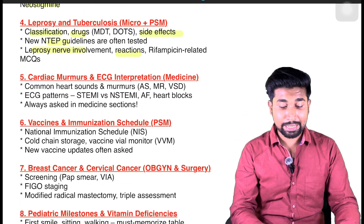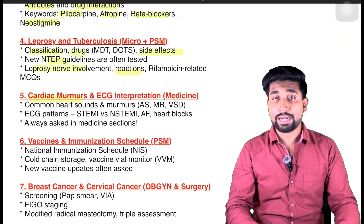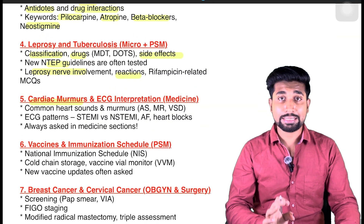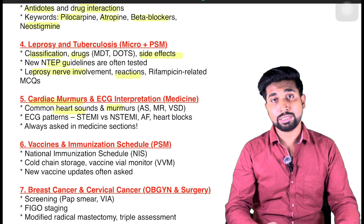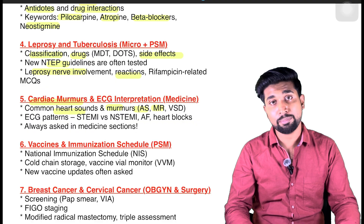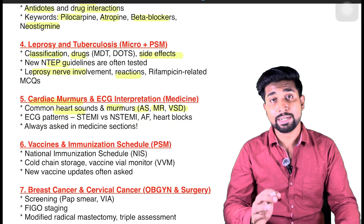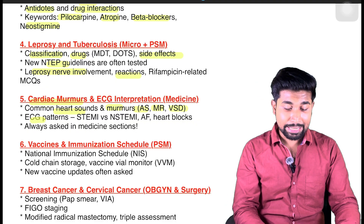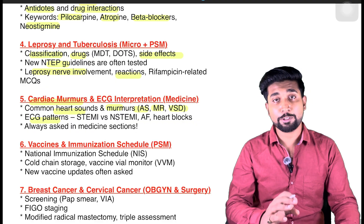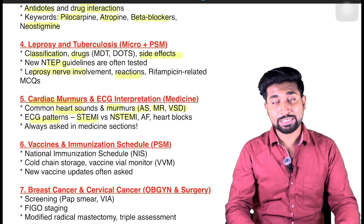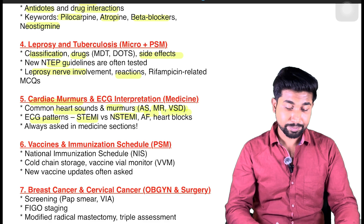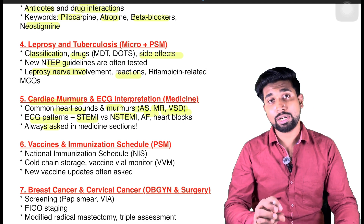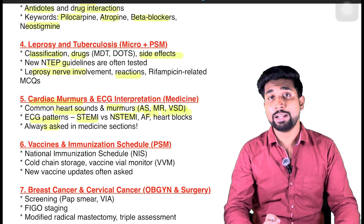From medicine, cardiac murmurs and ECG interpretation are often asked. Cover common heart sounds and murmurs — aortic stenosis, mitral regurgitation, ventricular septal defect, and congenital heart disorders. For ECG, understand the patterns and differentiation between ST-elevated and non-ST-elevated MI, atrial fibrillation, and heart blocks. These are very, very important questions which are frequently asked in medicine.